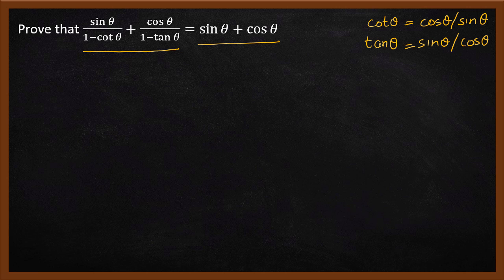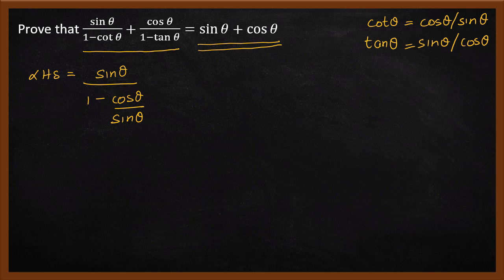Let's take a look at the equation. On the right-hand side, sin theta plus cos theta. Now let's work on the left-hand side. Left-hand side equals sin theta divided by 1 minus cos theta divided by sin theta, replacing cot theta.